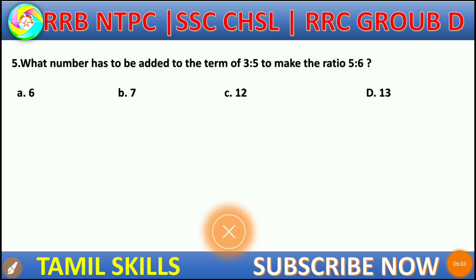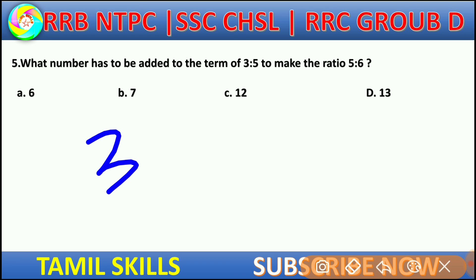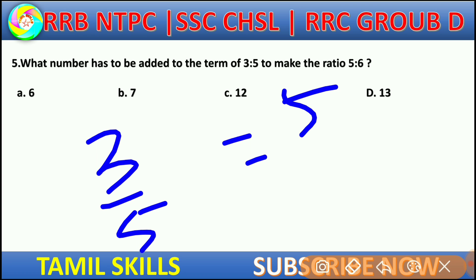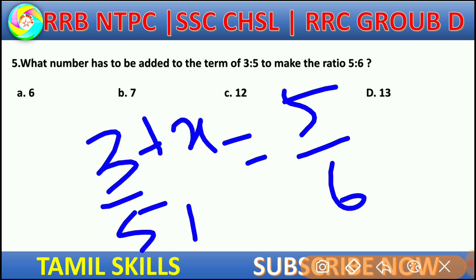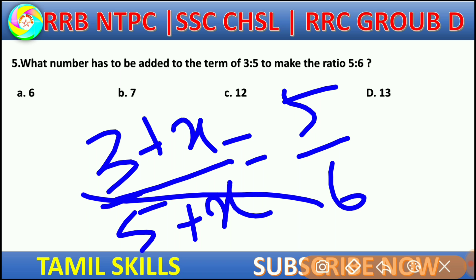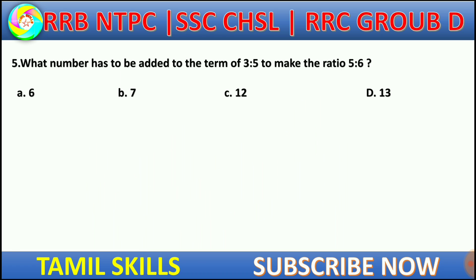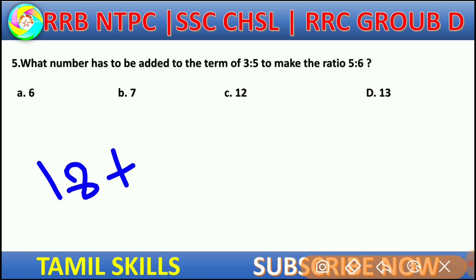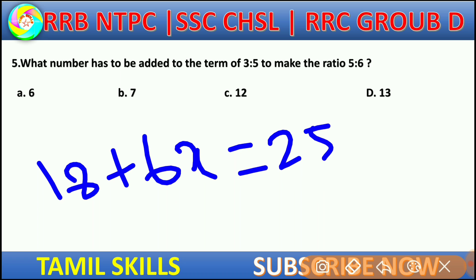What number has to be added to each term of the ratio 3 to 5 to make the ratio 5 to 6? We need to add a number X. Setting up: if we add 1, the ratio 3 to 5 becomes close to 5 to 6. We add 25 to check.